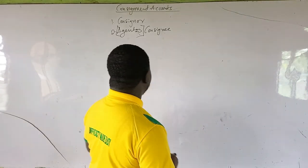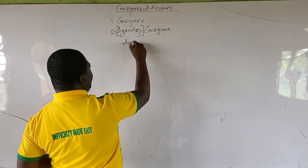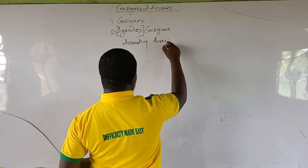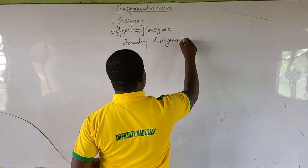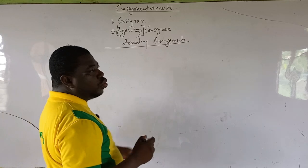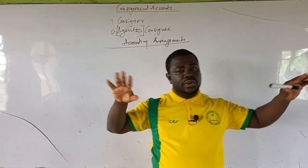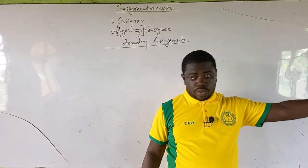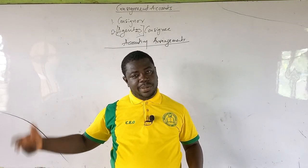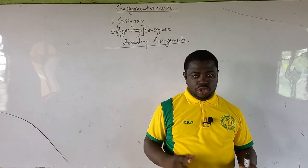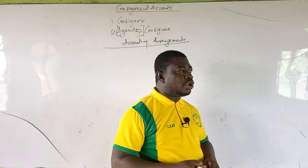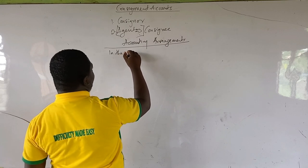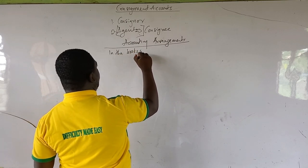When we come to the accounting arrangement, there are two different areas: accounts prepared in the books of the consignor and accounts in the books of the consignee. In the books of the consignor, there are three important accounts to open, and in the books of the consignee, there are some accounts as well.